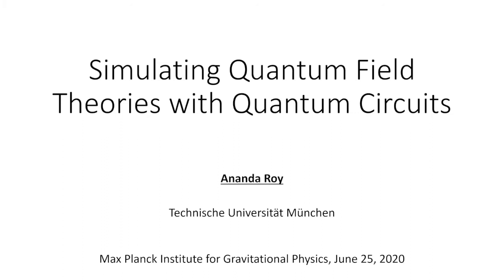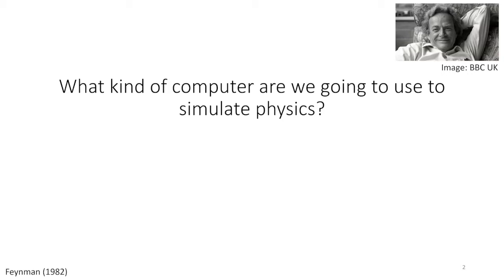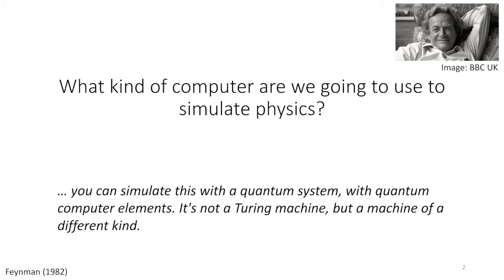I want to begin by going back to the pioneering thought of Richard Feynman, which gave rise to the whole field of quantum simulation. He asked: what kind of computer are we going to use to simulate physics? His motivation was that nature is inherently quantum mechanical, so any efficient simulation of nature must also be quantum mechanical. The problem is manipulating an exponentially large Hilbert space of a quantum many-body problem on a classical computer. He pointed out that a quantum system with quantum computer elements is not a Turing machine but a machine of a different kind.